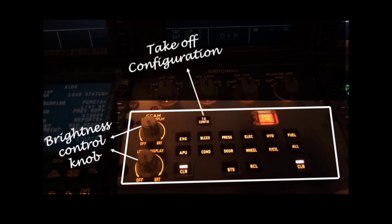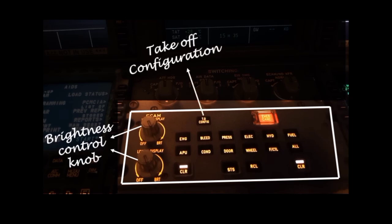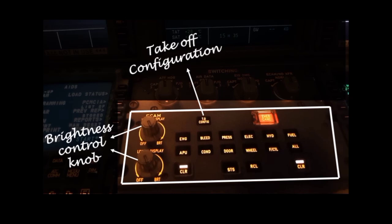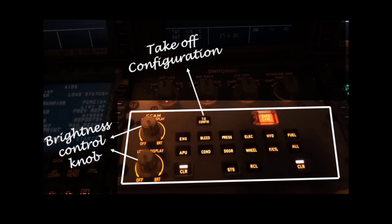This is the takeoff configuration button. When pushed, it simulates a takeoff power application to check if the airplane is in the proper takeoff configuration. If properly configured, a message 'takeoff config normal' will appear in green color in the takeoff memo.